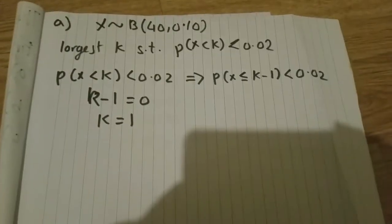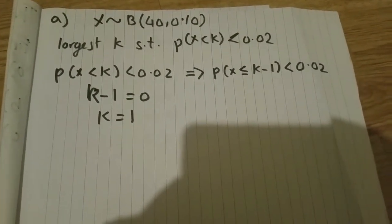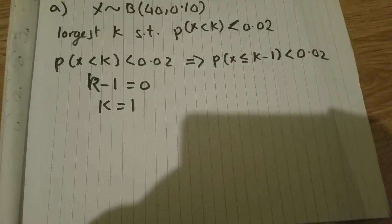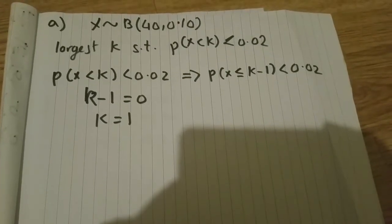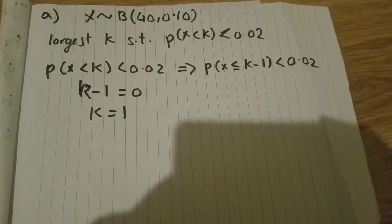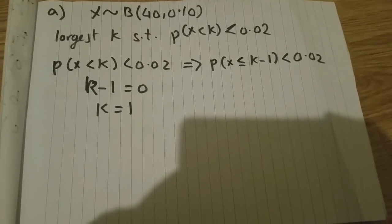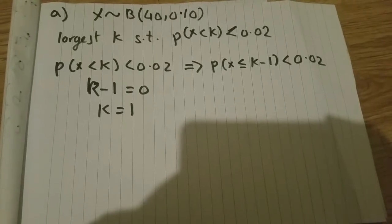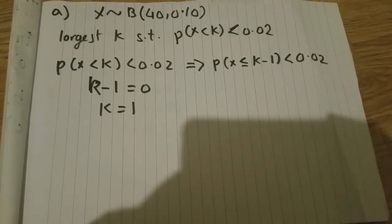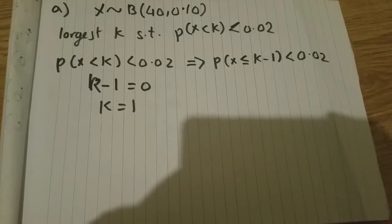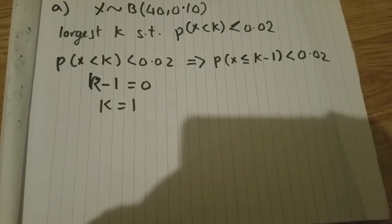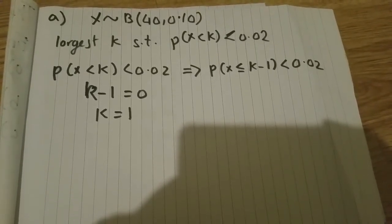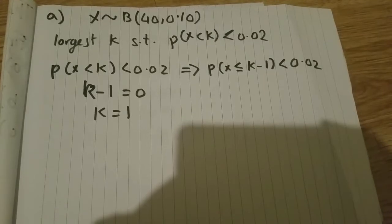So let's take these one by one. For part a, we have P(X<k) < 0.02. We can't really use the tables or calculator that way. We know that if we're less than k, we're less than or equal to k-1. That makes sense - if we're less than 4, we're less than or equal to 3, just common sense.